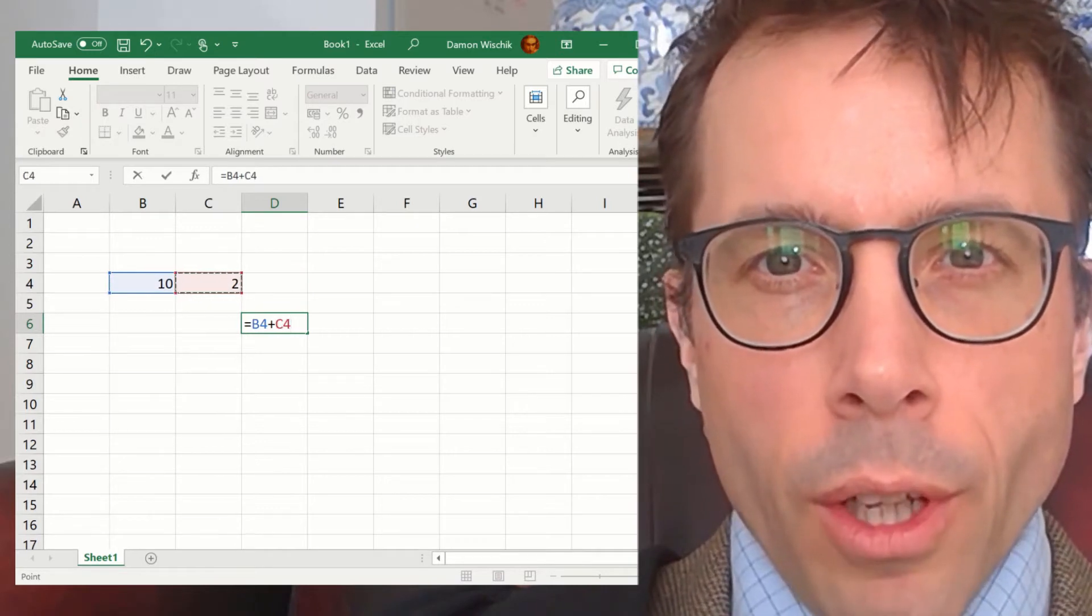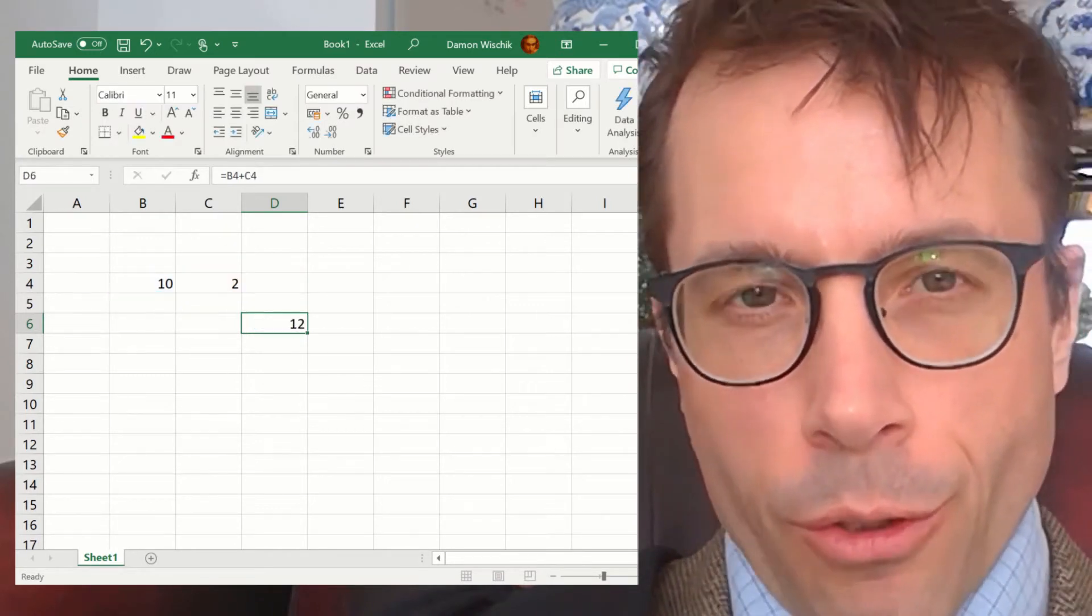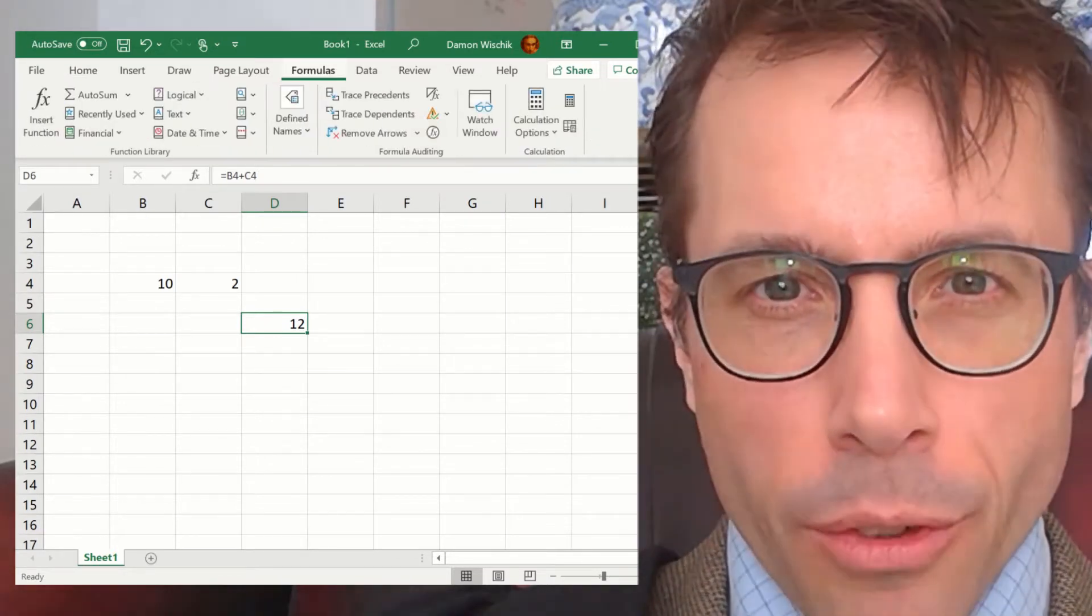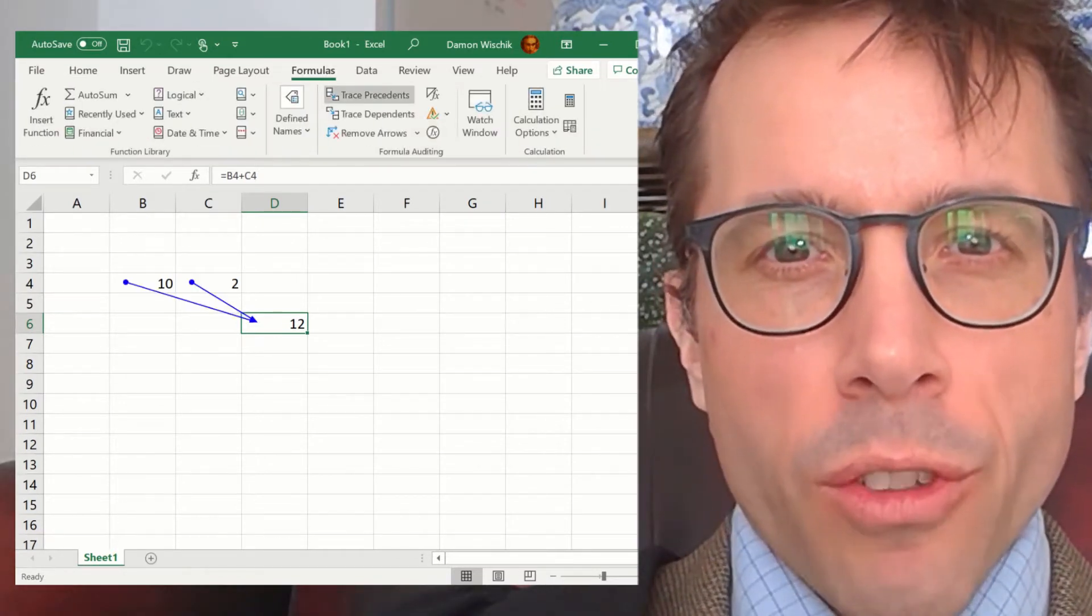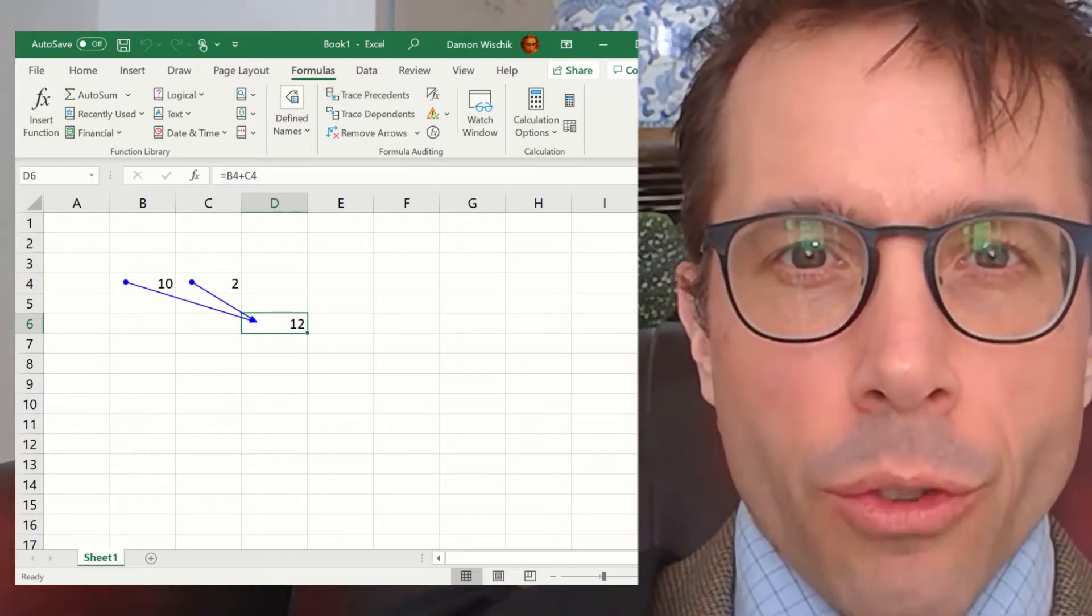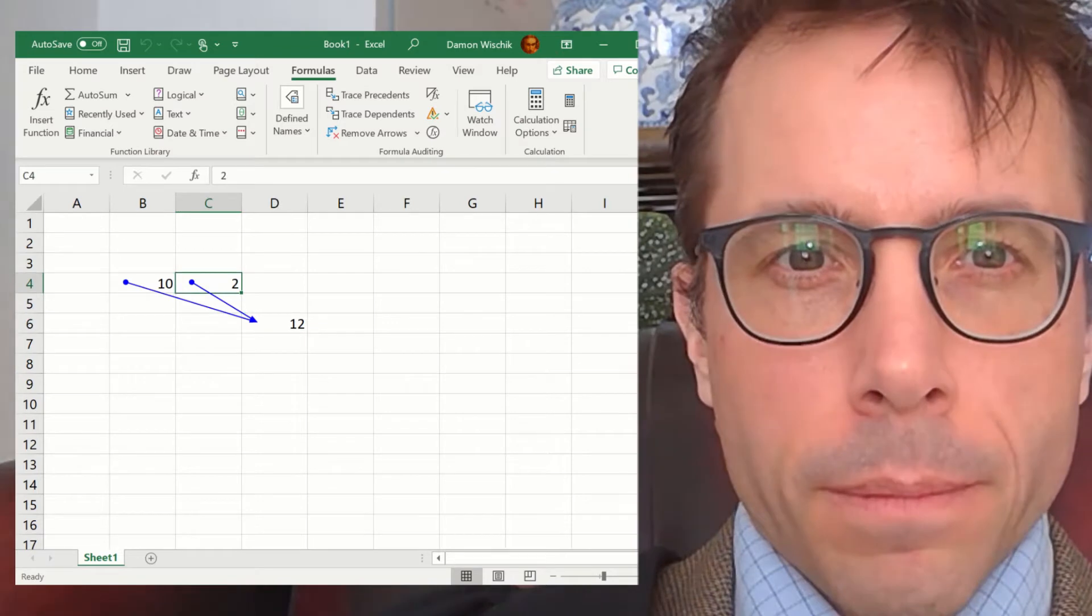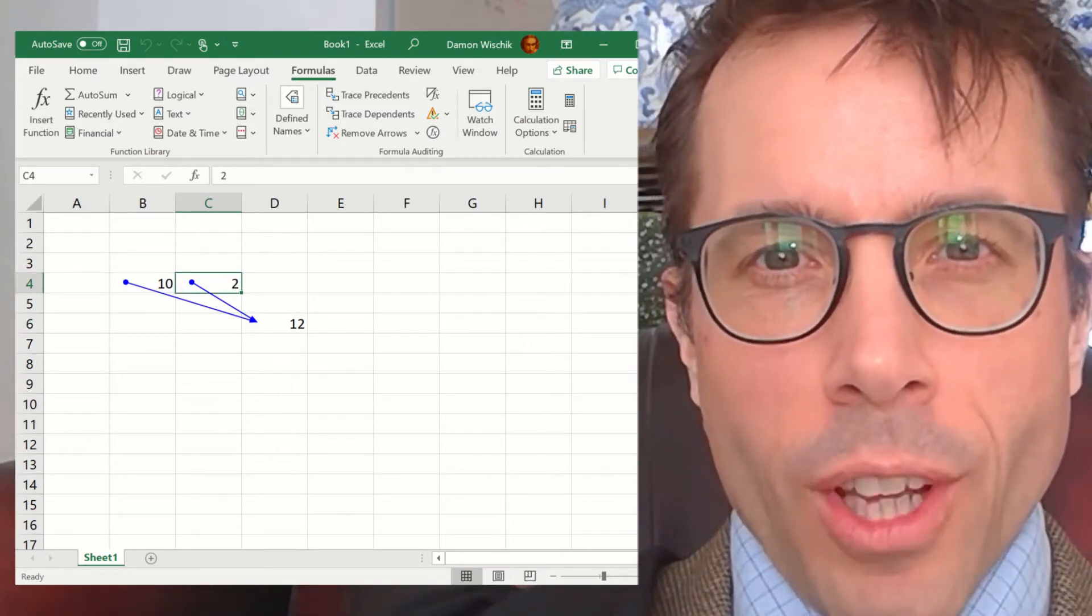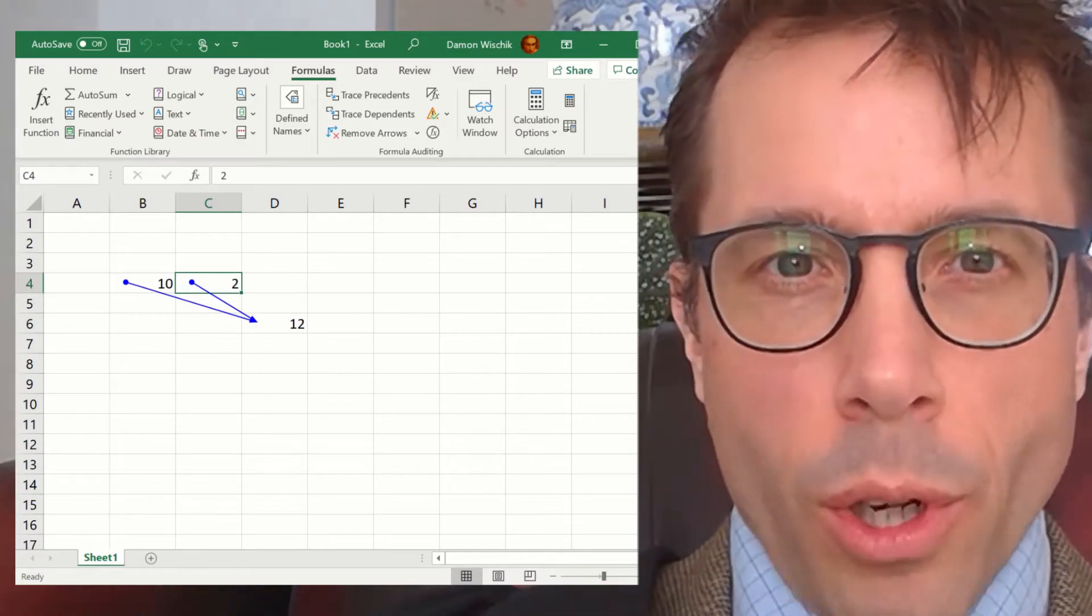10 plus 2 equals 12, no surprises here. Now this is what's neat: I go to the formulas menu, click on trace precedents, and it shows me these little arrows showing which values went into which formula.